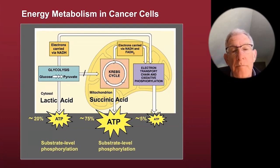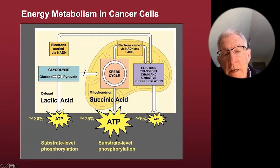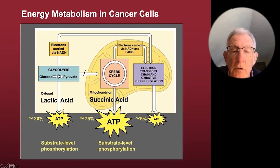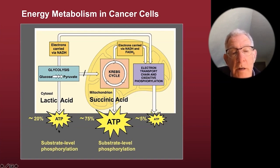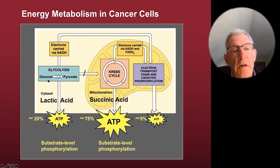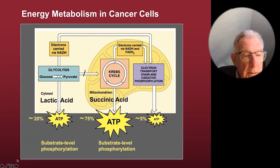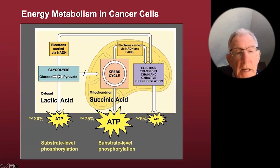So the cancer cell is simply falling back on ancient pathways, acidifying the microenvironment. These fuels are driven — here's glucose driving one part, and glutamine, the amino acid, driving another part. The abnormal energy of the cancer cell is being driven by glucose and glutamine, not by oxygen, because they've lost that ability.